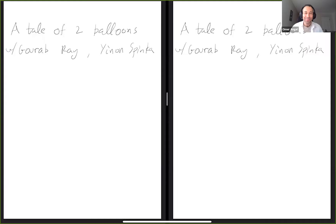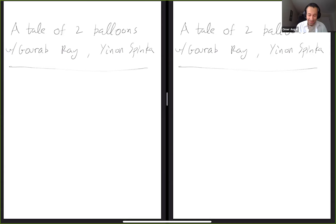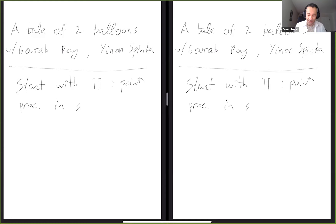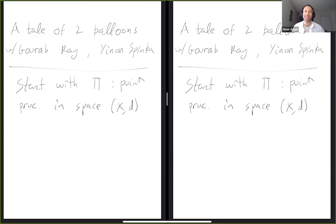We are considering the following process. I'll start by defining it and then say a bit about relations. The process is very easy to define. You start with some point process π in some metric space X_d. We don't need too many assumptions for the process to be defined, but eventually we will look mainly at very specific spaces. We start growing balloons around the points.